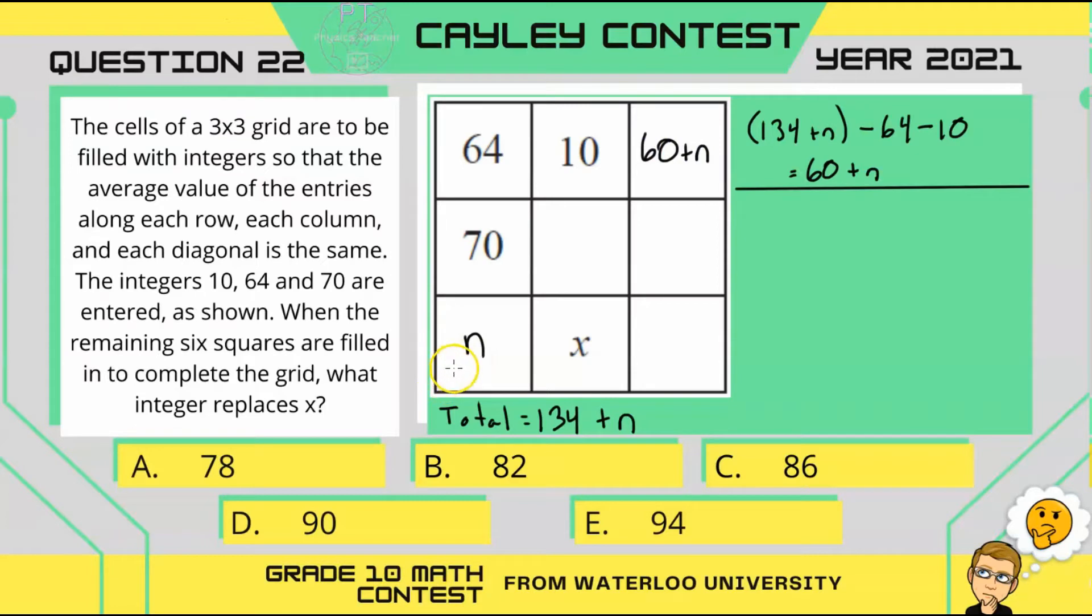Next, let's look at this diagonal here. The total would still be 134 plus n. So, if we wanted to figure out what this center cell is, we would simply take the total and subtract the other two cells.